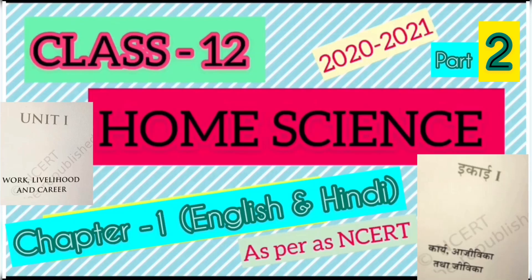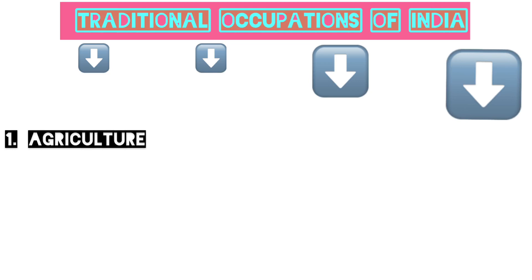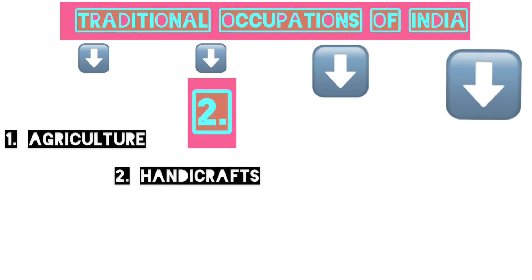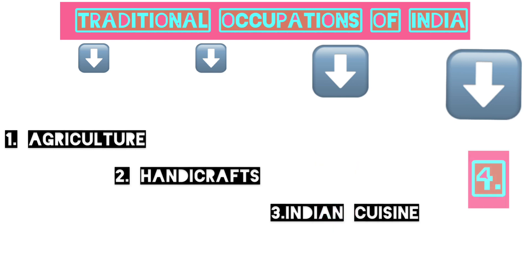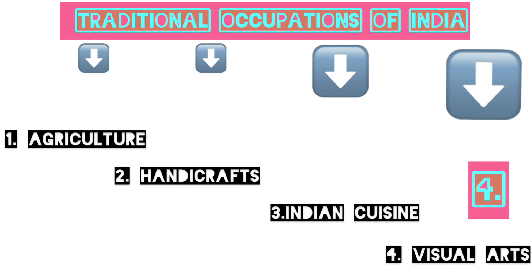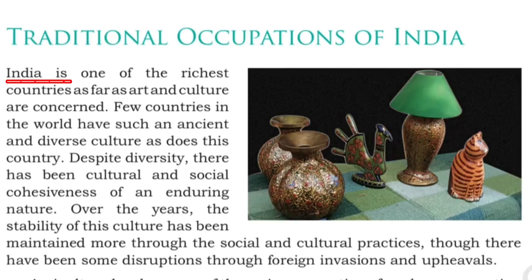Hey guys, welcome back! I hope you all are doing well. This video is part two, which talks about traditional occupations of India according to the NCERT syllabus. Under this topic we have four subjects: agriculture, handicrafts, Indian cuisine, and visual arts. All these topics will be covered in detail as per the latest NCERT 2020 syllabus, with important questions and topics marked.